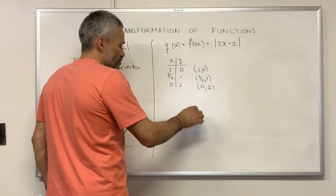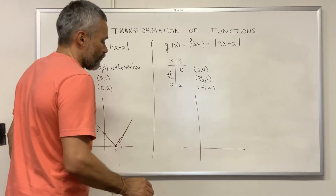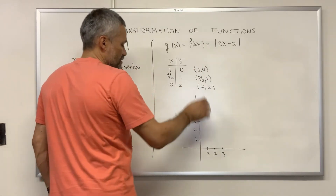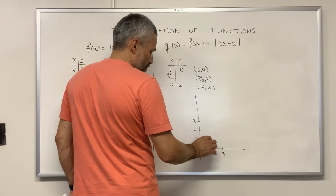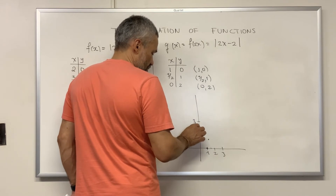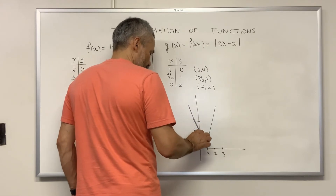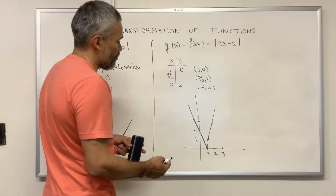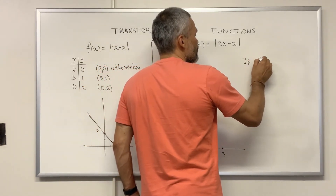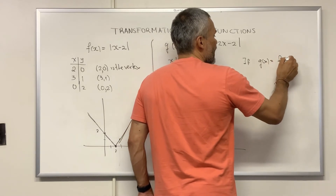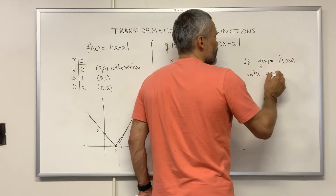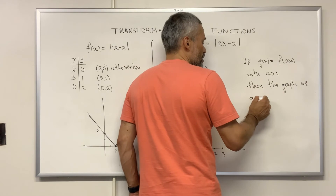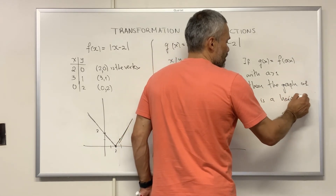The graph of g has points (1, 0), (3/2, 1), and (0, 2). We notice this is a compression of the original graph, but it's a horizontal compression. In general, if g of x equals f of ax with a greater than 1, then the graph of g is a horizontal compression of the graph of f.